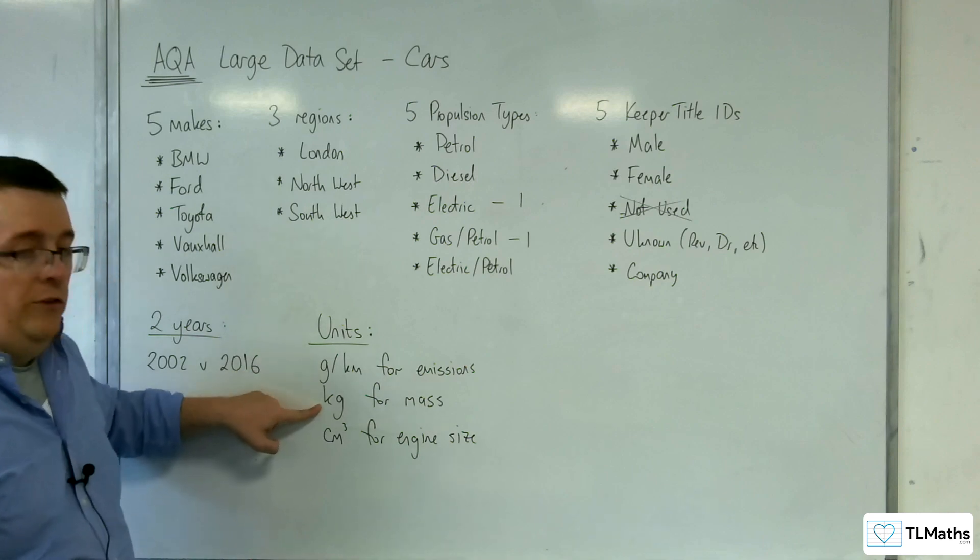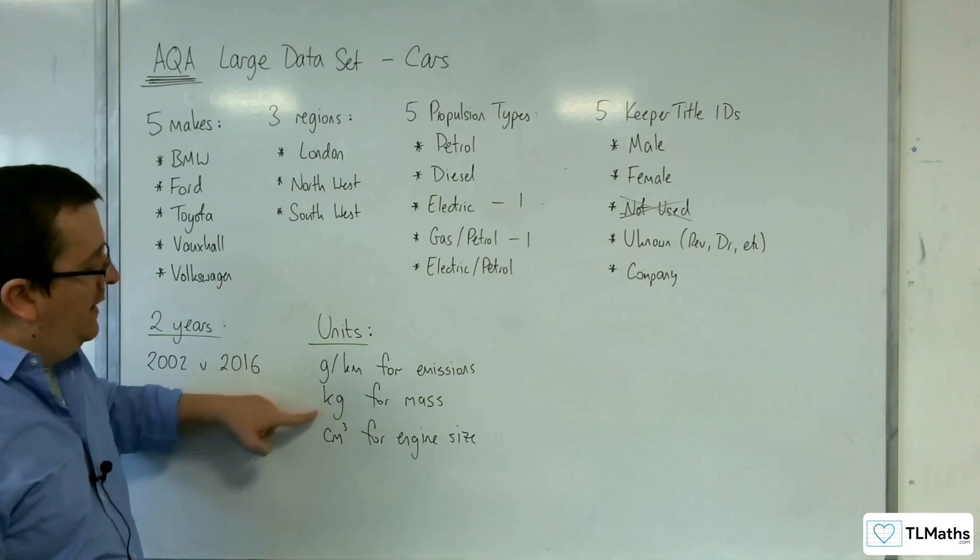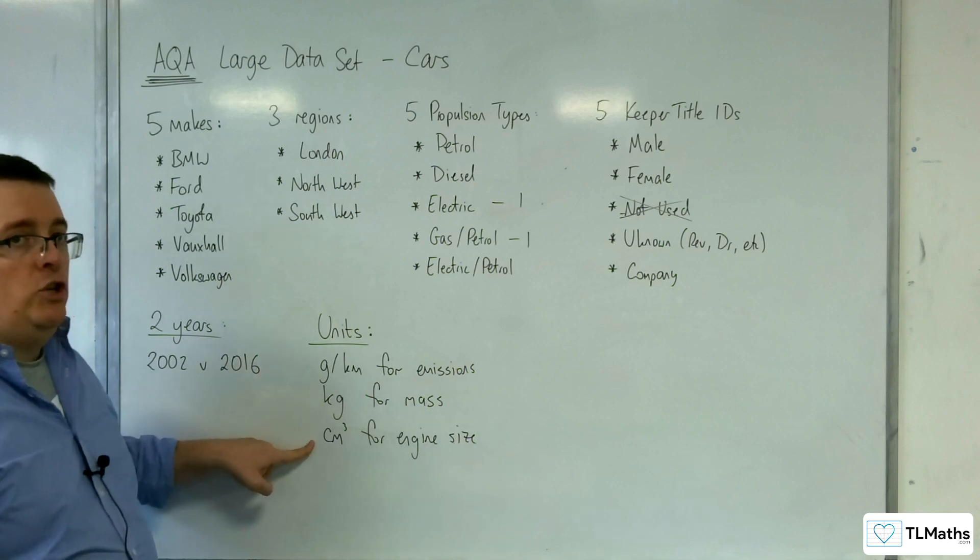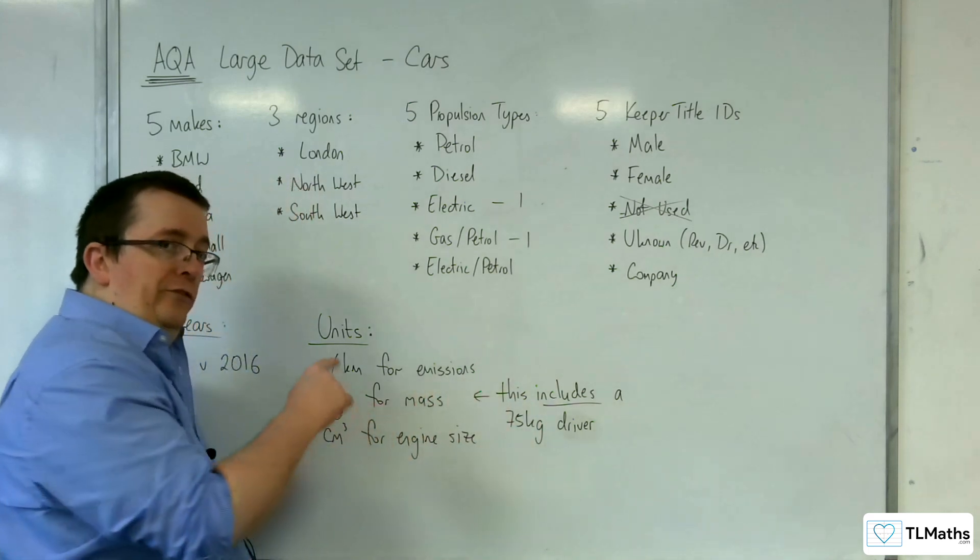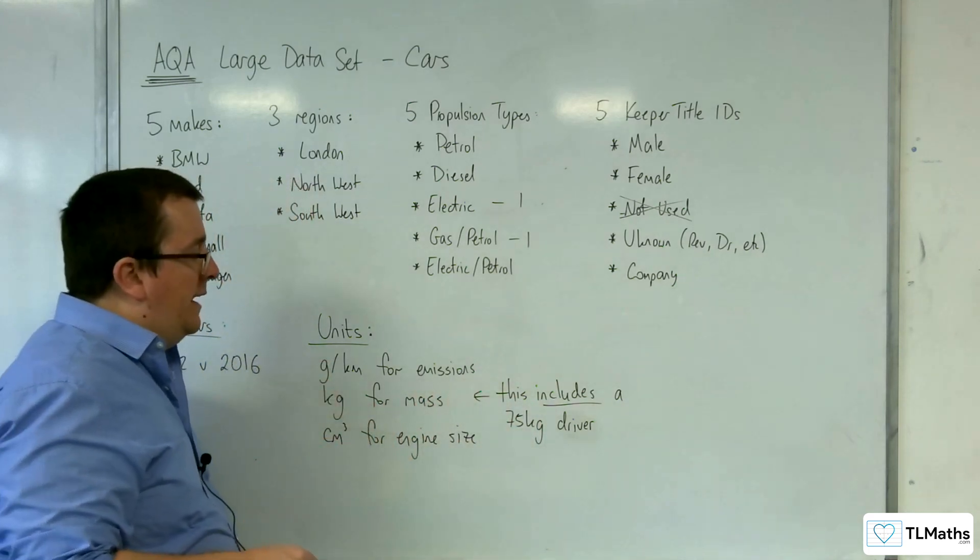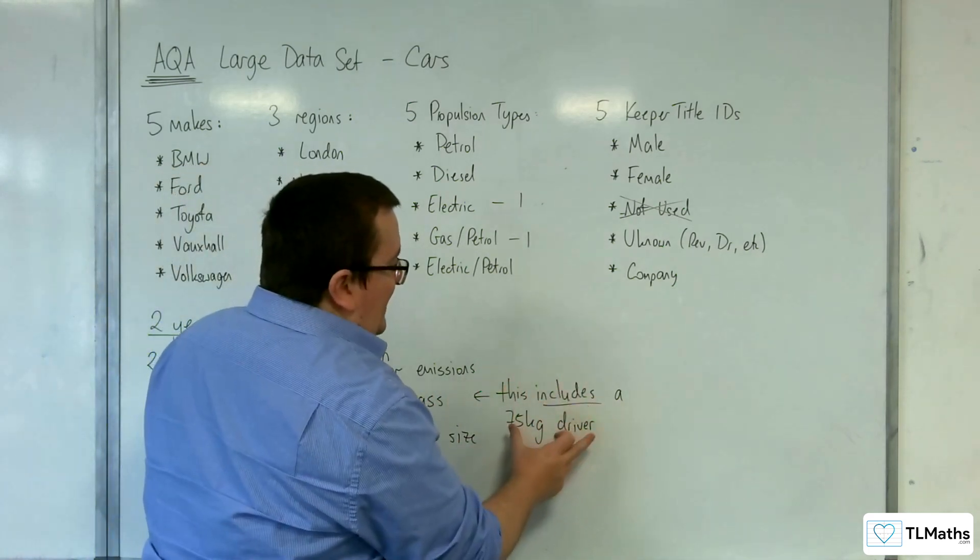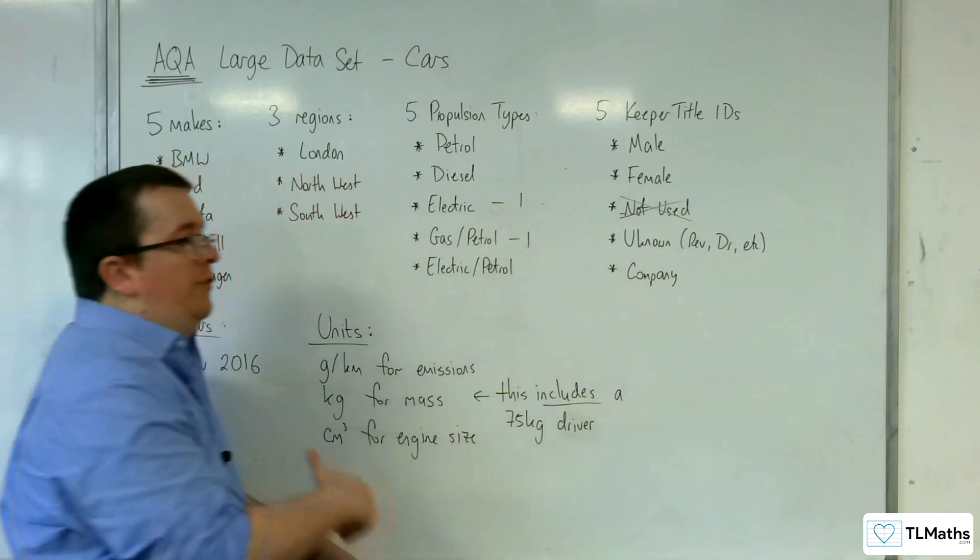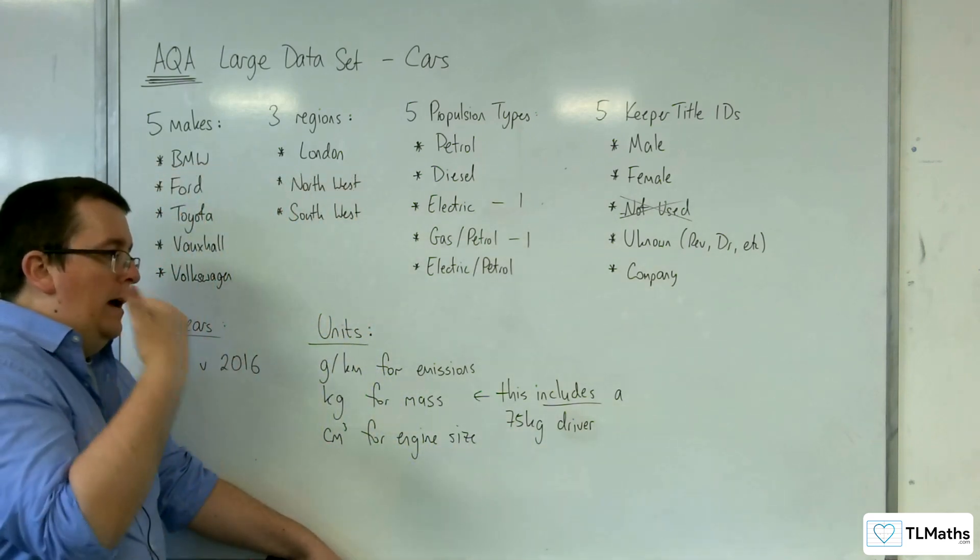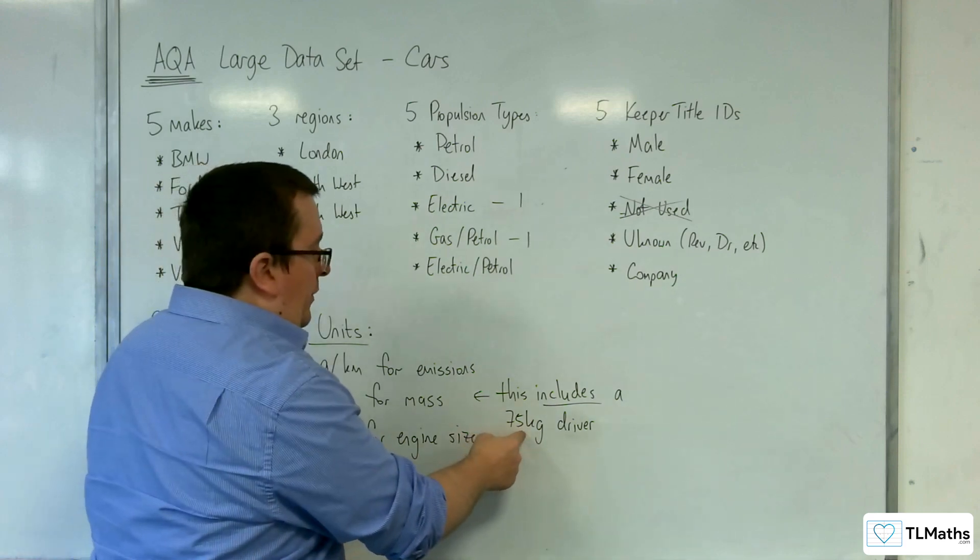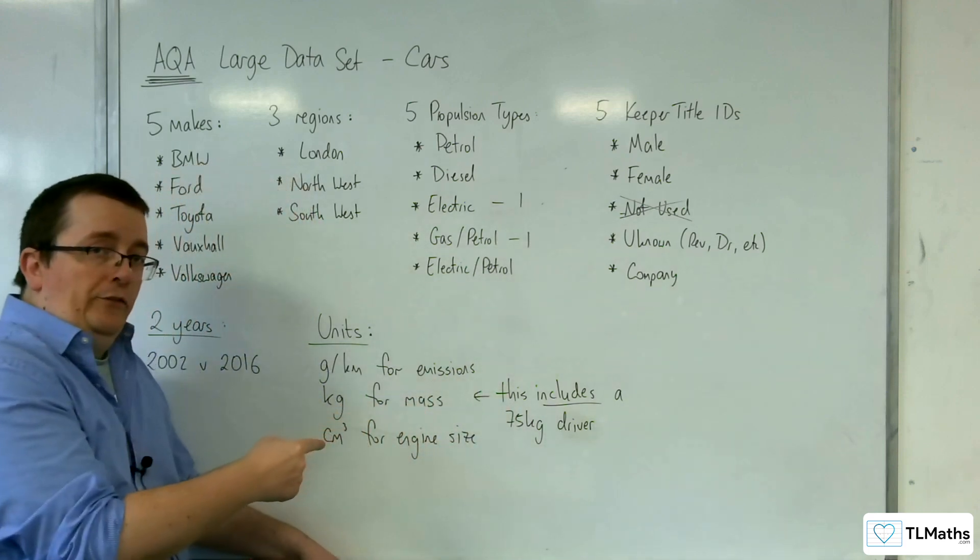Mass of the vehicle is measured in kilograms, and the engine size is measured in cubic centimetres. Now, included within the mass for each of the vehicles that is in the data set, they've included a 75 kilo driver. So they've done an average driver mass, 75 kilos, and that's included in the mass for each vehicle.